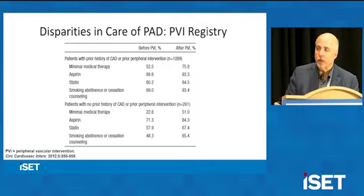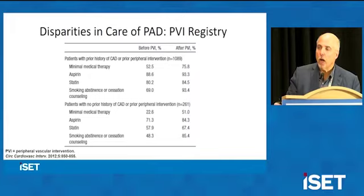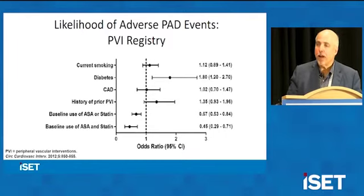In the PVI registry, part of the American College of Cardiology NCDR registry, these are patients coming for a peripheral vascular intervention — their diagnosis has been made and revascularization determined. Yet even after peripheral vascular intervention, not the entirety of the population is treated with effective atherosclerotic therapy. The likelihood of having an adverse peripheral artery event is higher in patients with diabetes, so this is clearly a population that needs aggressive attention.